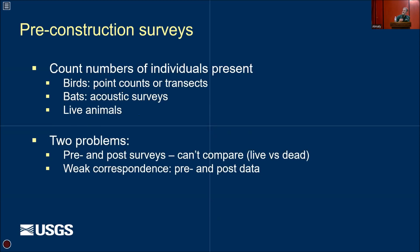Pre-construction surveys generally focus on counting the number of individuals present. For birds, we use point counts or transects; for bats, we use acoustic surveys, and we almost always focus on live animals. But it becomes a problem because when we do post-construction surveys, we always count dead animals, and it's very hard to compare one versus the other. We know that there is weak correspondence between the two, and the way we do pre-construction surveys doesn't tell us a lot about the impacts.